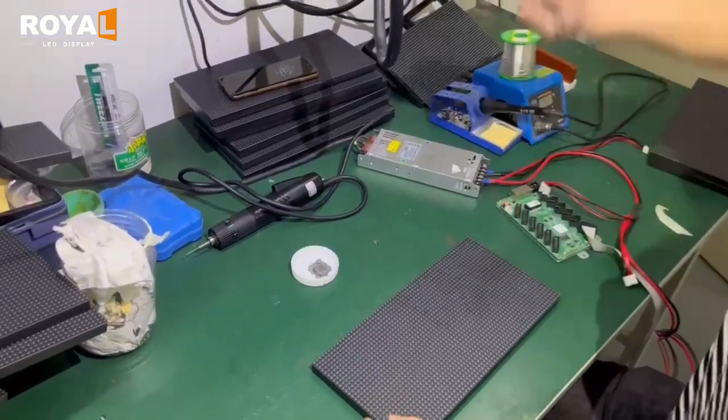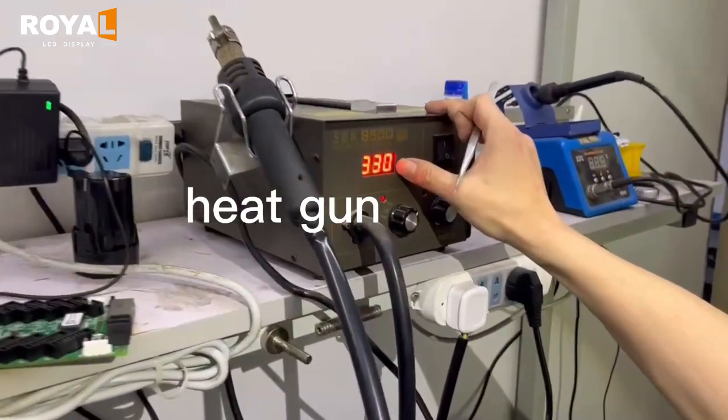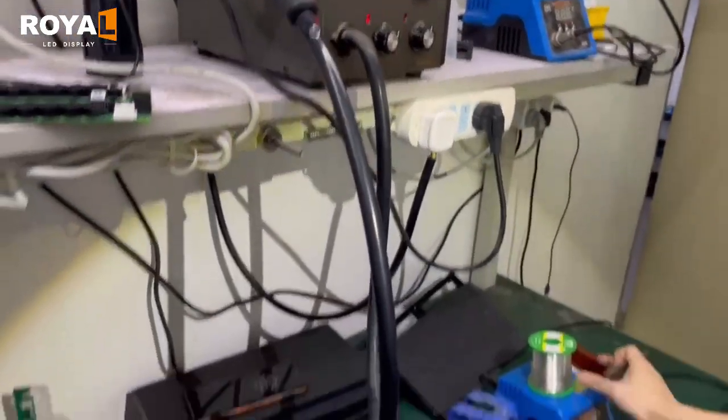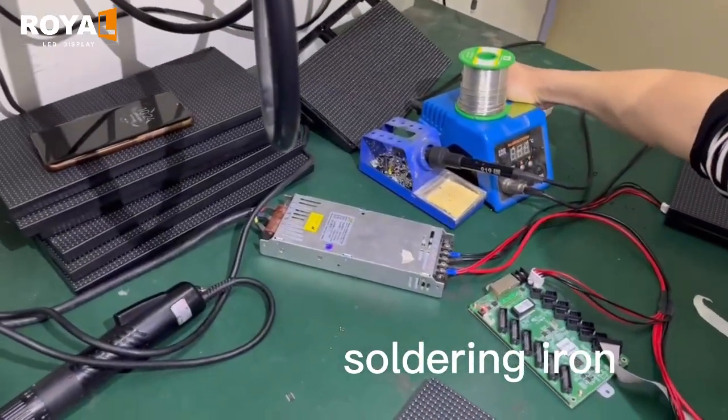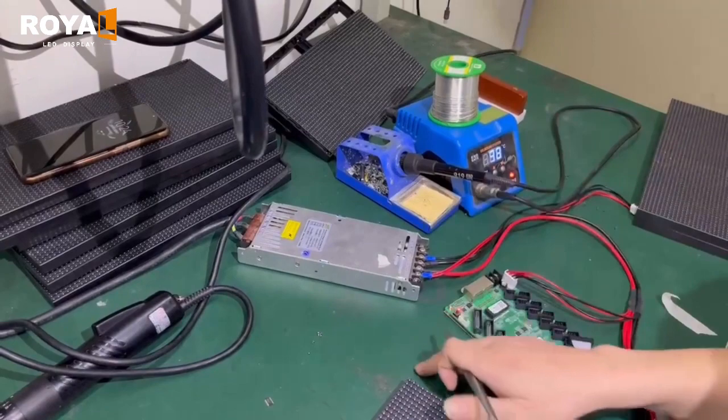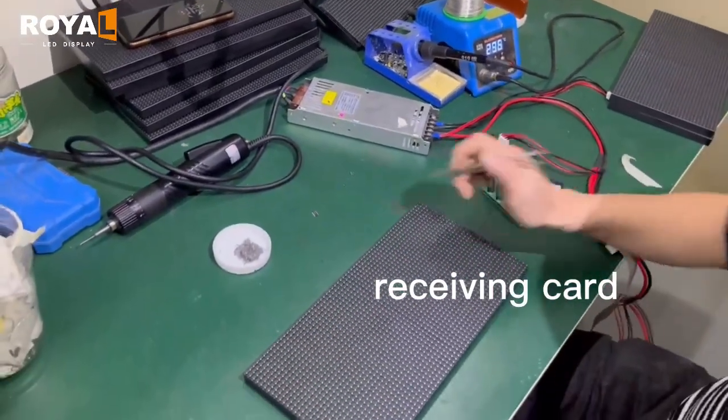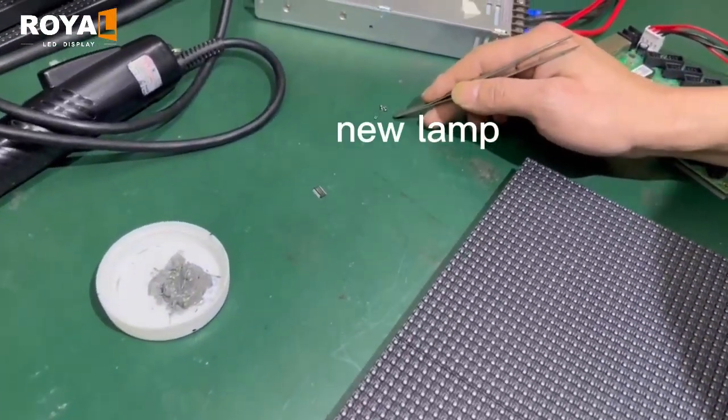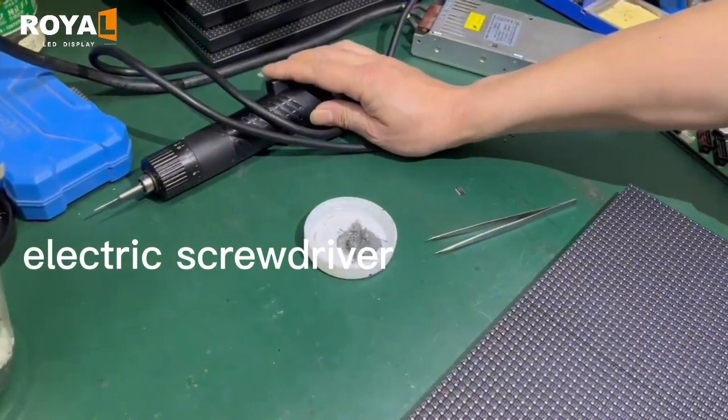To repair indoor LED modules, the tools we need are: heat gun adjusted to about 300 to 330 degrees, soldering iron, power supply, receiving card, solder paste, IC, new lamp, tweezers, and electric screwdriver.